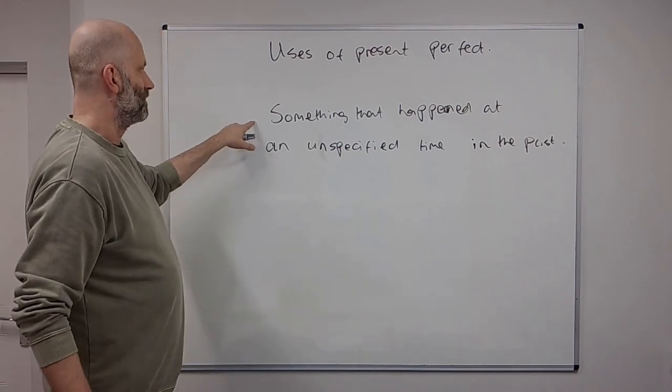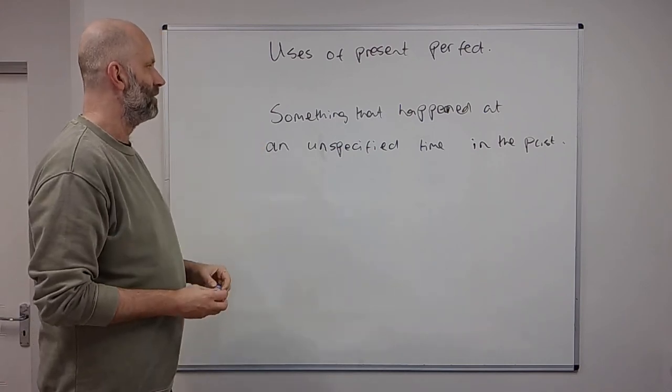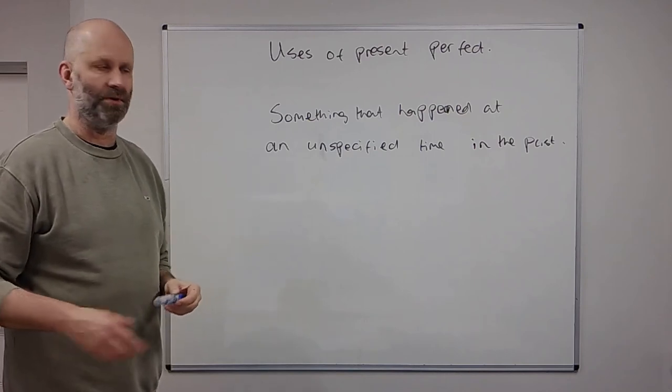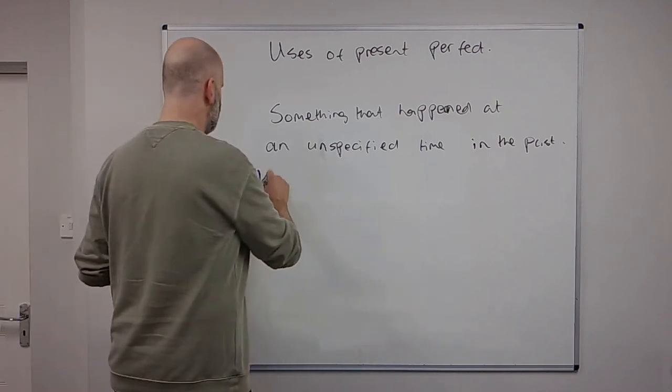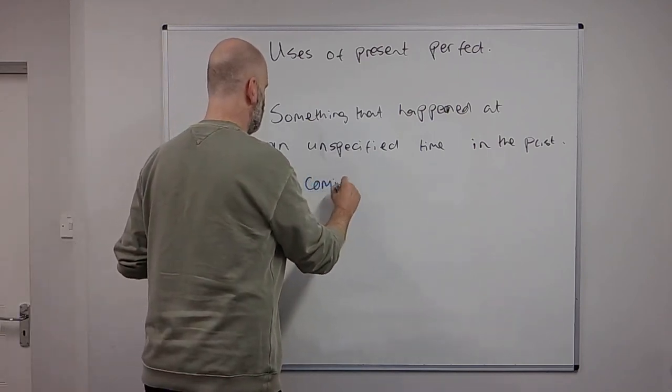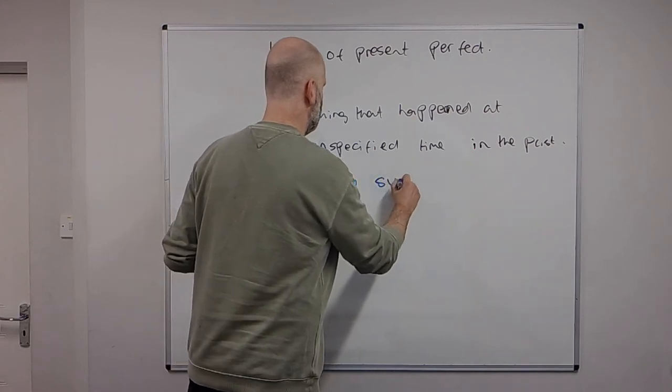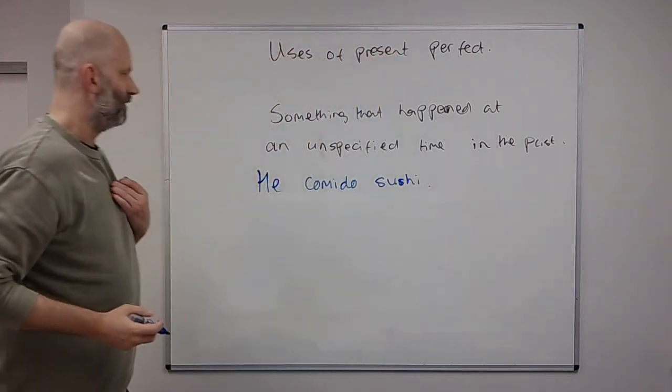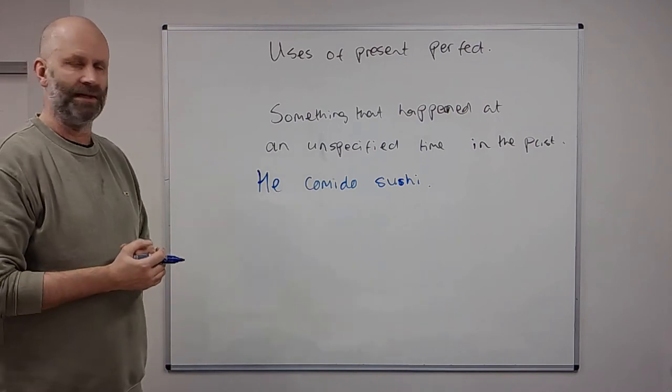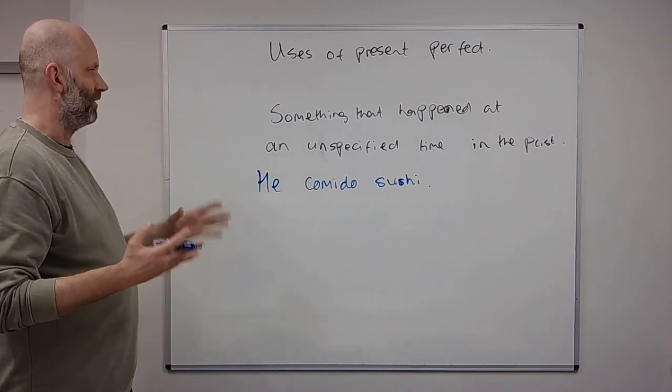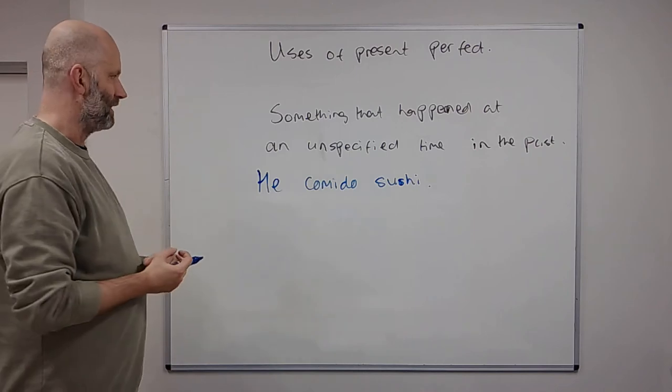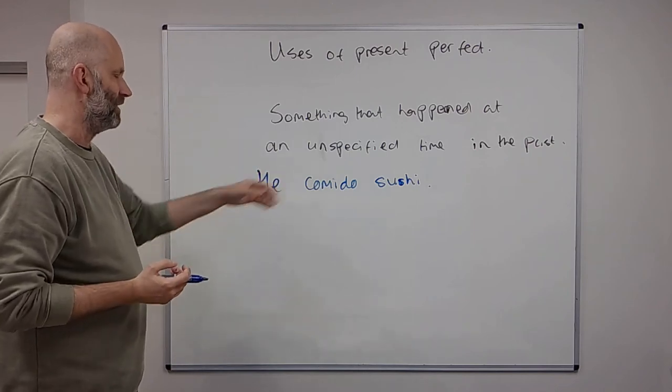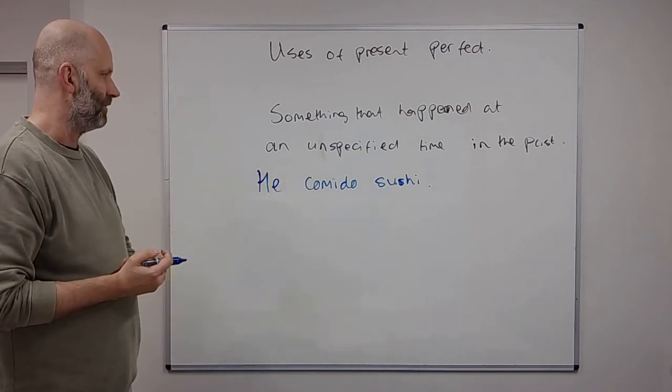Okay. Now the second use of the present perfect: when you talk about something but you don't say when it happened. So for example, he comido sushi. So this could be, often it's used with things which are done in the recent past, but when it happened isn't mentioned, although this could really be any time in your life.